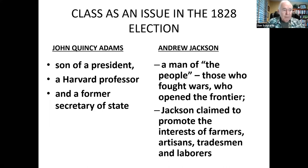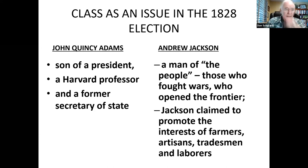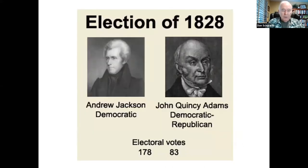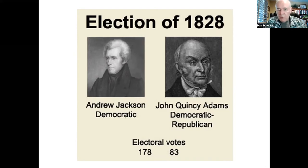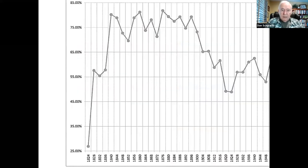1828 was the first campaign in US history where contributors contributed over a million dollars. It was also the first campaign with known instances of ballot fraud — wagon loads of Jackson supporters spilled over from Tennessee into Kentucky and Ohio to cast votes in the names of citizens who had died. In the end, Jackson won 178 electoral votes to just 83 for the sitting president, John Quincy Adams.